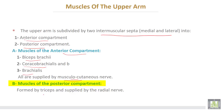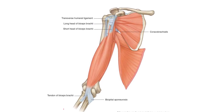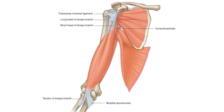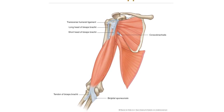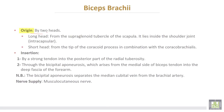The posterior compartment is formed by the triceps and is supplied by the radial nerve. The anterior compartment contains three muscles: biceps, coracobrachialis, and deep to the biceps, the brachialis muscle. The posterior compartment is formed by the triceps muscle.